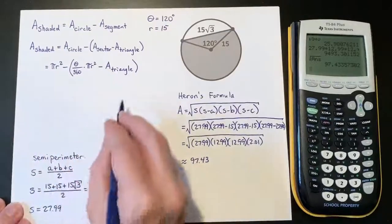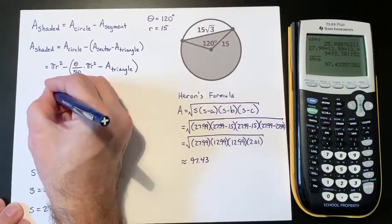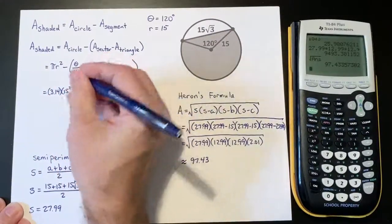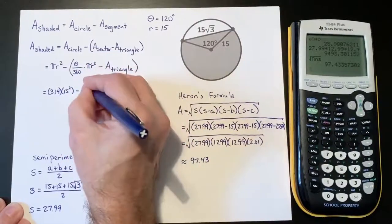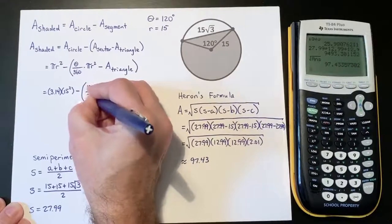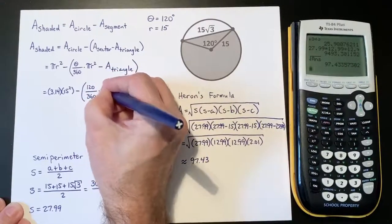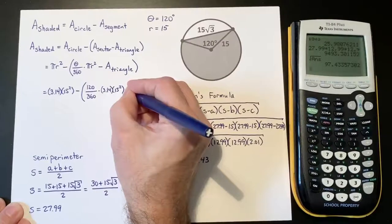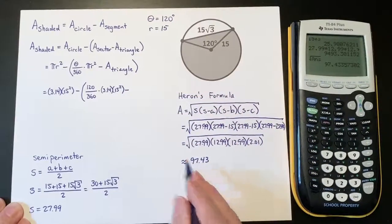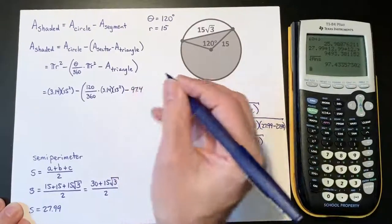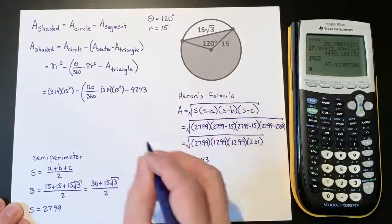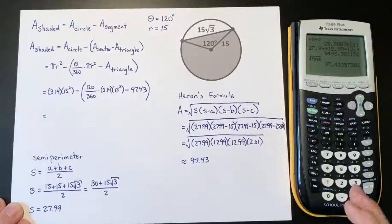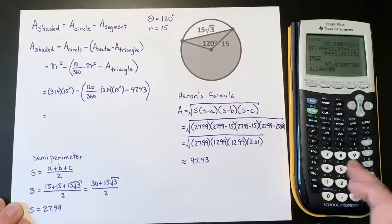So if I come back over here and start inputting everything into our original formula, I'm going to have π times radius squared, which is 15², minus theta 120/360 times π times radius squared, minus the area of the triangle, 97.43. And this gives us 3.14 times 15².